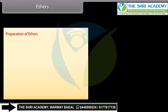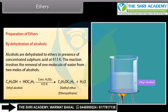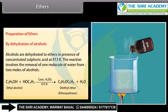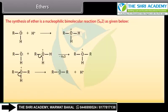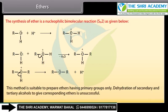Preparation of ethers — By dehydration of alcohols: Alcohols are dehydrated to ethers in the presence of concentrated sulfuric acid at 413 Kelvin. The reaction involves the removal of one molecule of water from two moles of alcohol. The synthesis of ether is a nucleophilic bimolecular reaction. This method is suitable to prepare ethers having primary groups only. Dehydration of secondary and tertiary alcohols to give corresponding ethers is unsuccessful.